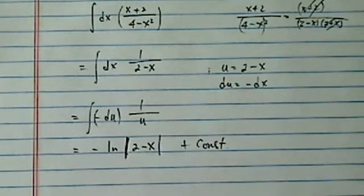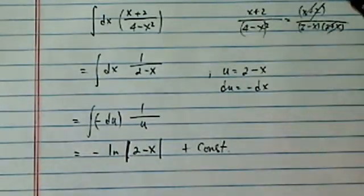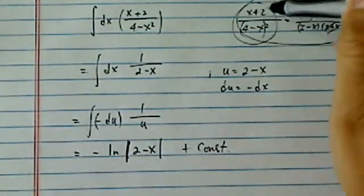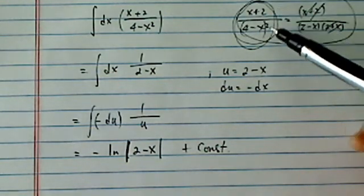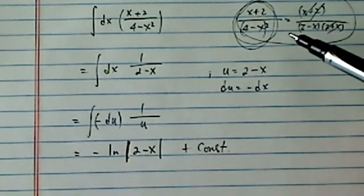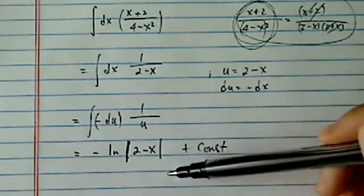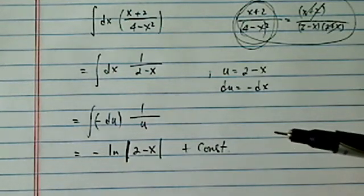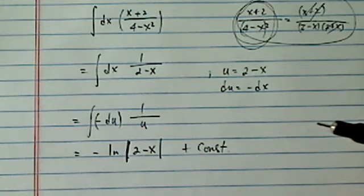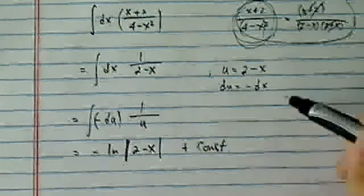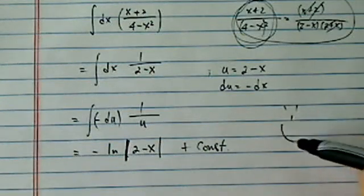So in solving this type of problem, simplify. When you have rational expressions, see if you can simplify by factoring first before you go on. That's how we solve this type of problem. Hope it's clear. Please let me know if you liked the video, or leave me a comment on YouTube and let me know if it helped you. Till next time, have a confident day.